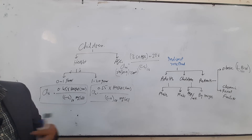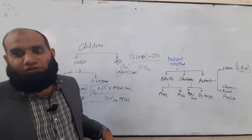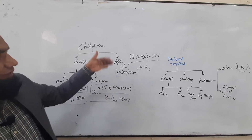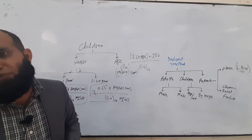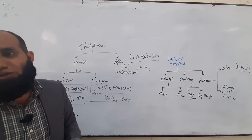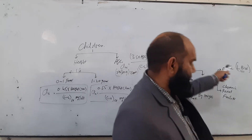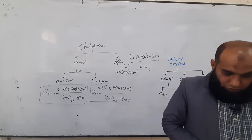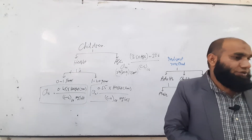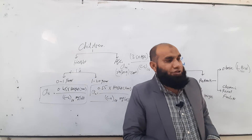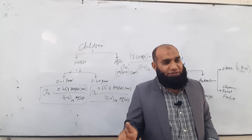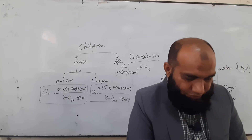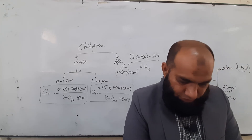If disturbed values in creatinine clearance are found, those calculations described so far are for normal individuals. When there are differences and problems, we deal with patients and divide them into two categories: obese patients and chronic renal failure patients. In the case of obese patients, we first check the lean body weight — lean body weight is the body weight excluding extra fats.